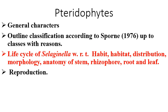Hi students. In the first video of Selaginella, we learned about general characters and outline classification of pteridophytes according to Sporn 1976. In this second video, we will be discussing about the life cycle of Selaginella, but restricted to habit, habitat, distribution, morphology, and anatomy of stem, rhizophore, root, and leaf. So we can start this presentation.